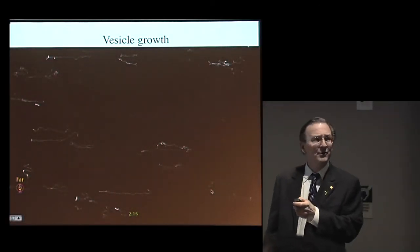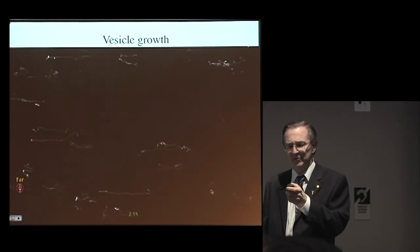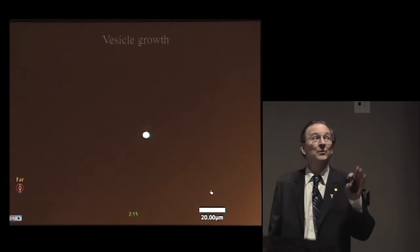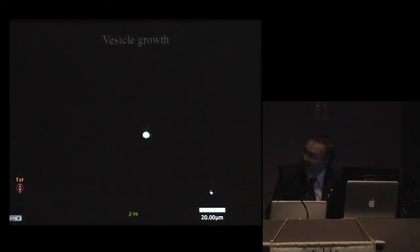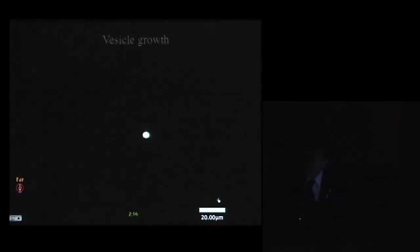Let me just show you a movie, a time lapse of that process, because it's pretty cool. We'll definitely need the lights down for this. What you see very early on is a faint, thin filament coming out of the parental vesicle. And over a period of about half an hour, it gets brighter, thicker, and longer. That's how it actually happens.